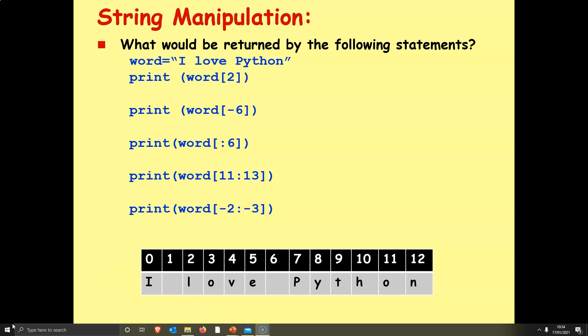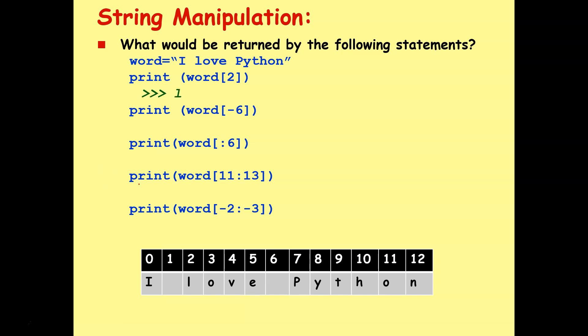Okay, and we're back. So the first one will give us just the L. So position 2 is just the L. Minus 6 will give us the capital P for Python. Word colon 6 will just say I love. Print word 11 colon 13 will just give us on. So obviously there is no 13, so it'll just give us 11 and 12. It stops 1 before the number that you give. And print word minus 2 colon minus 3 will just give us O. So minus 3 is position 12, which is M, but we're not including that because it's exclusive. So it's just going to give us that position, which is the O.